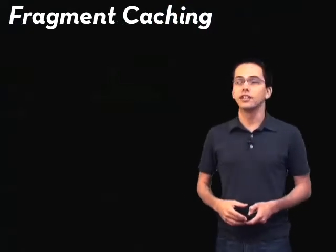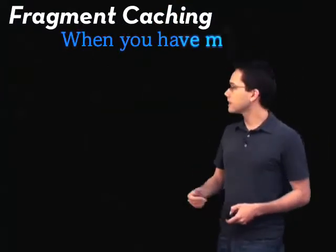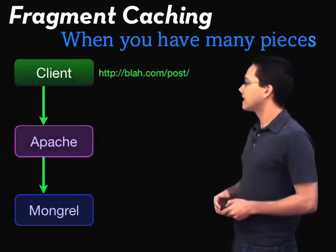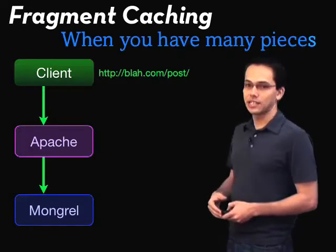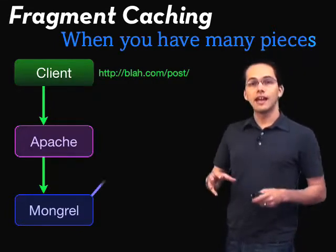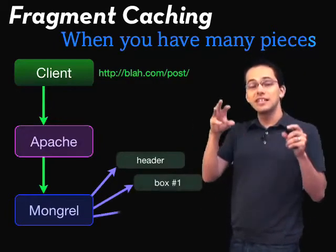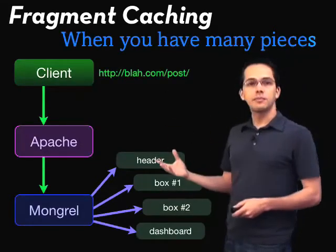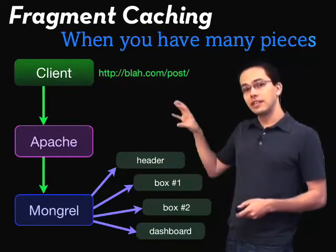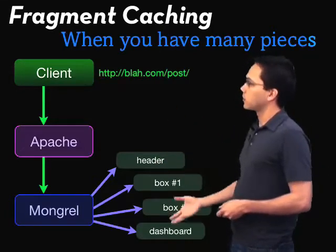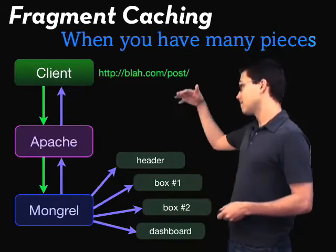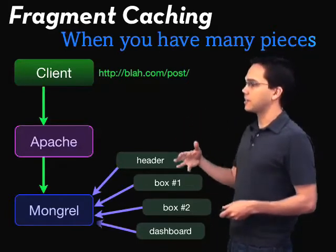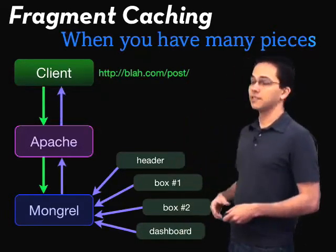In this episode, we're going to be taking a look at fragment caching. Let's call up our Apache and Mongrel again and see what this looks like. Here comes our client request — it goes through Apache to the Mongrel, and this particular page has several different pieces we want to cache independently. Maybe it has a header, a couple boxes, and a dashboard. As we render the page, we save those items separately in their own little cache. The request goes back out to the client, and the second time a request comes in, we pull these different pieces out of the cache, combine them into a single page, and send that back out to the client.